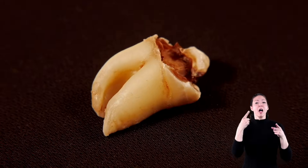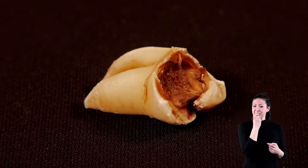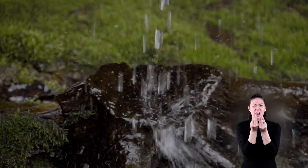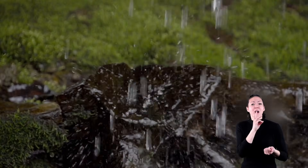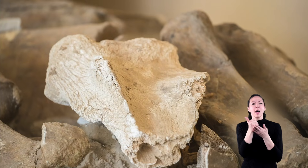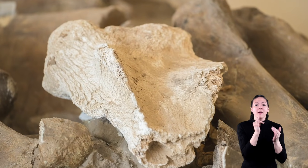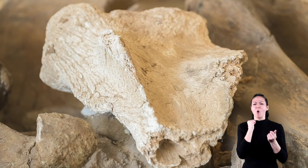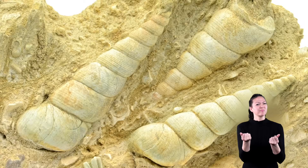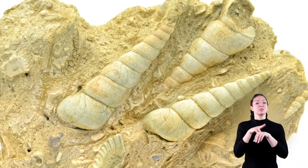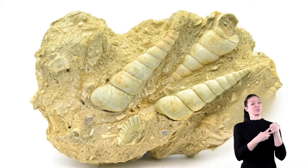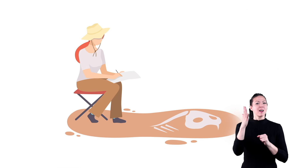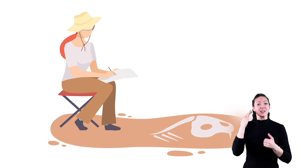What happens is, as bones and teeth and other parts start to rot or decay, water carrying minerals can seep into the cracks. These minerals then harden, which makes it so the bones and teeth don't decay any further. Basically, nature has its own way of preserving animals and plants from millions of years ago, which allows us to find and study them today.